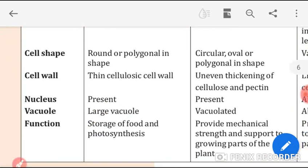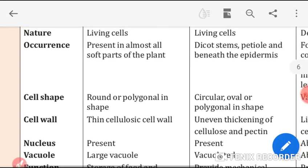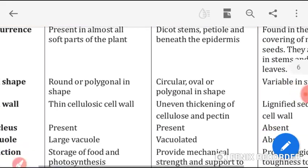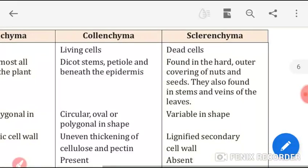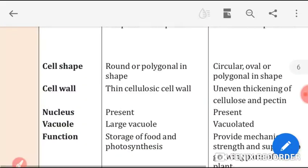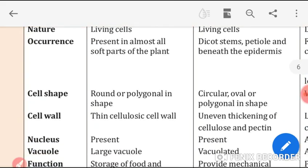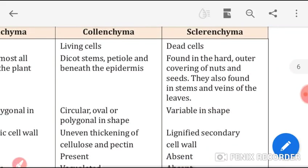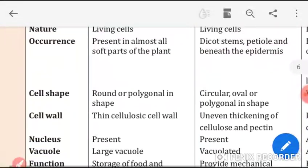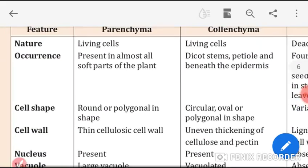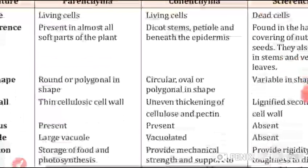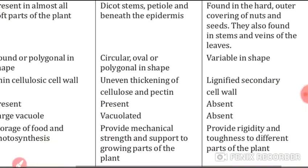Regarding cell wall: parenchyma has a thin cellulosic cell wall; colenchyma has uneven thickening of cellulose and pectin; sclerenchyma has a lignified secondary cell wall. Nucleus is present in both parenchyma and colenchyma, but absent in sclerenchyma. Regarding vacuoles: parenchyma and colenchyma have large vacuoles, while sclerenchyma has none.